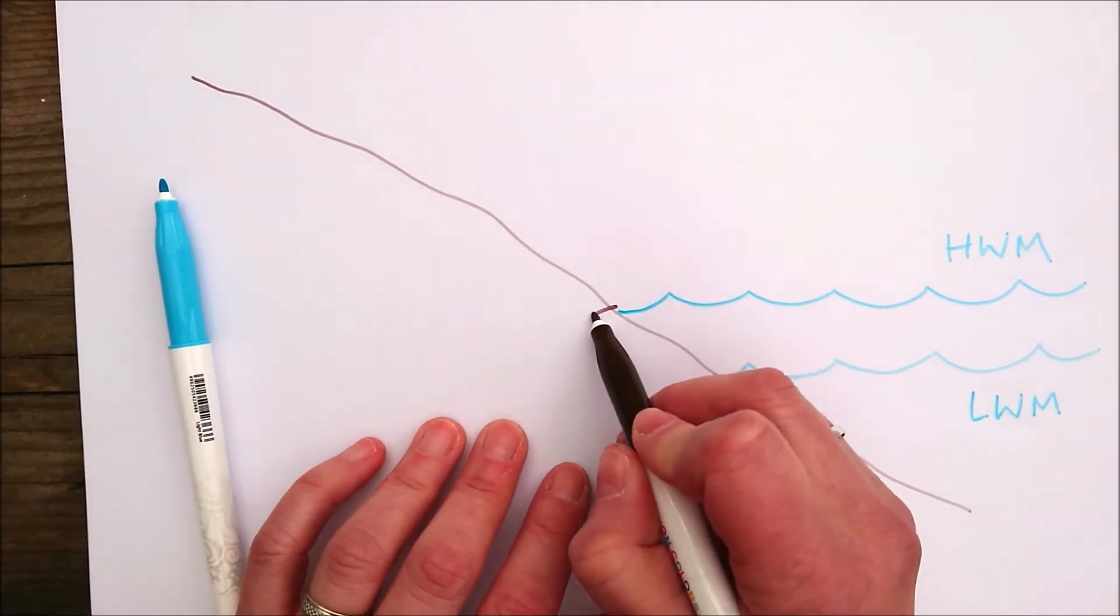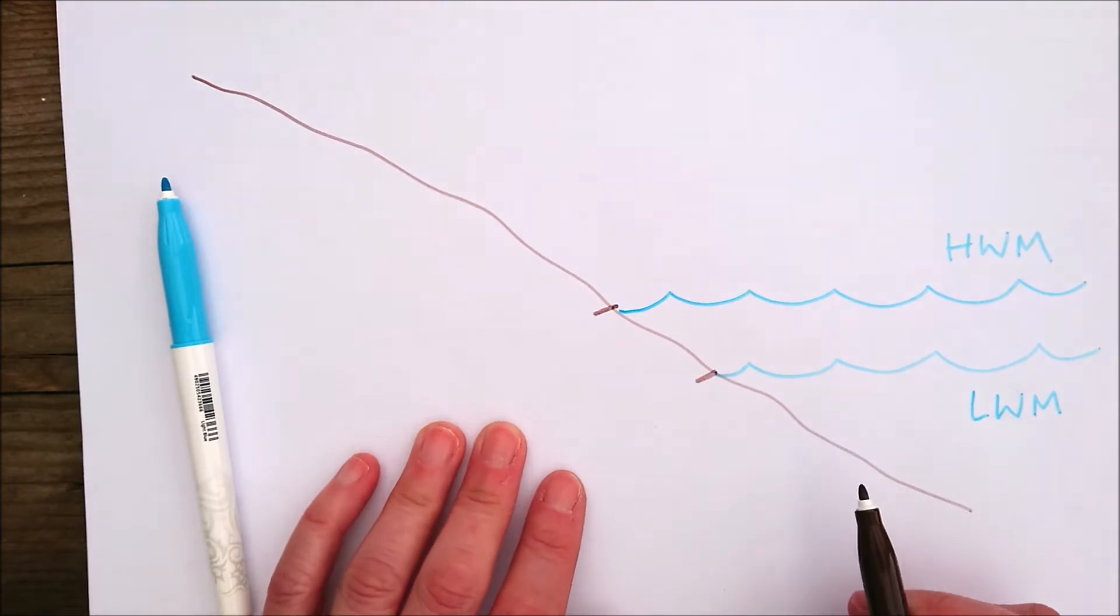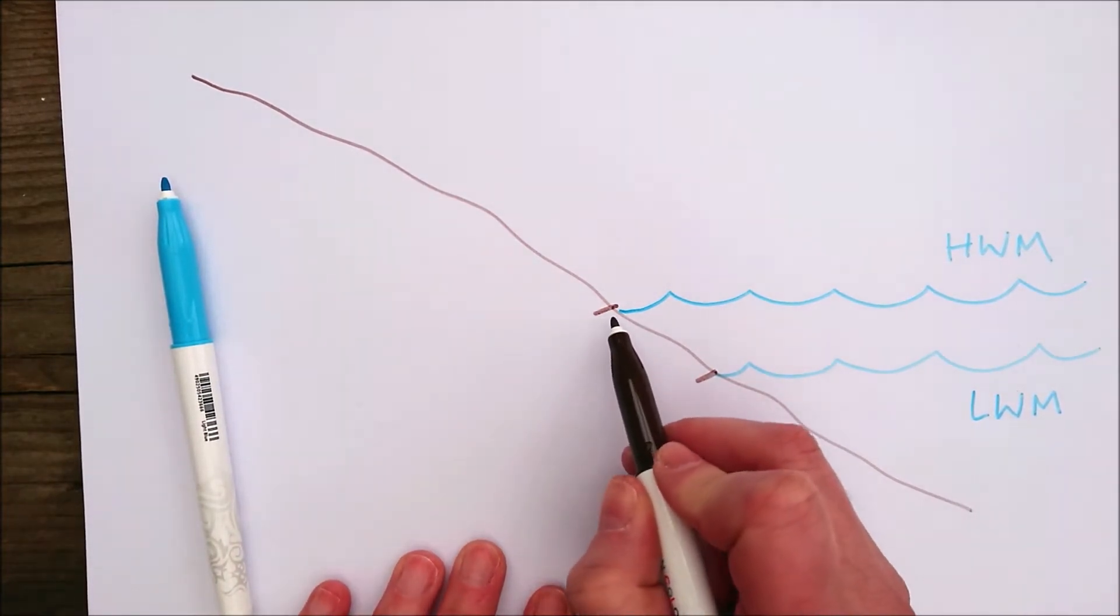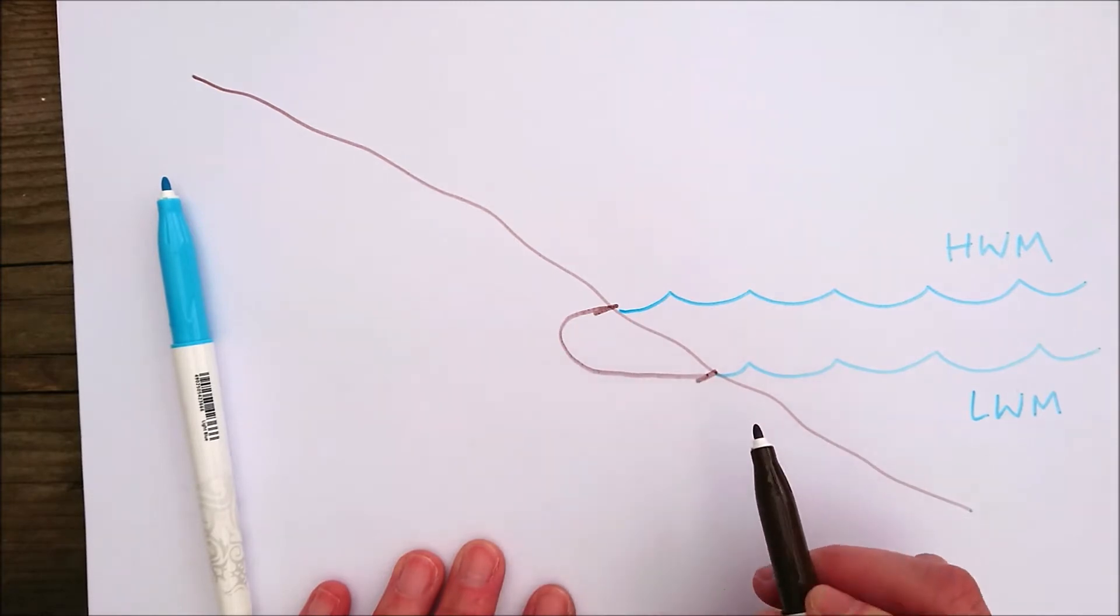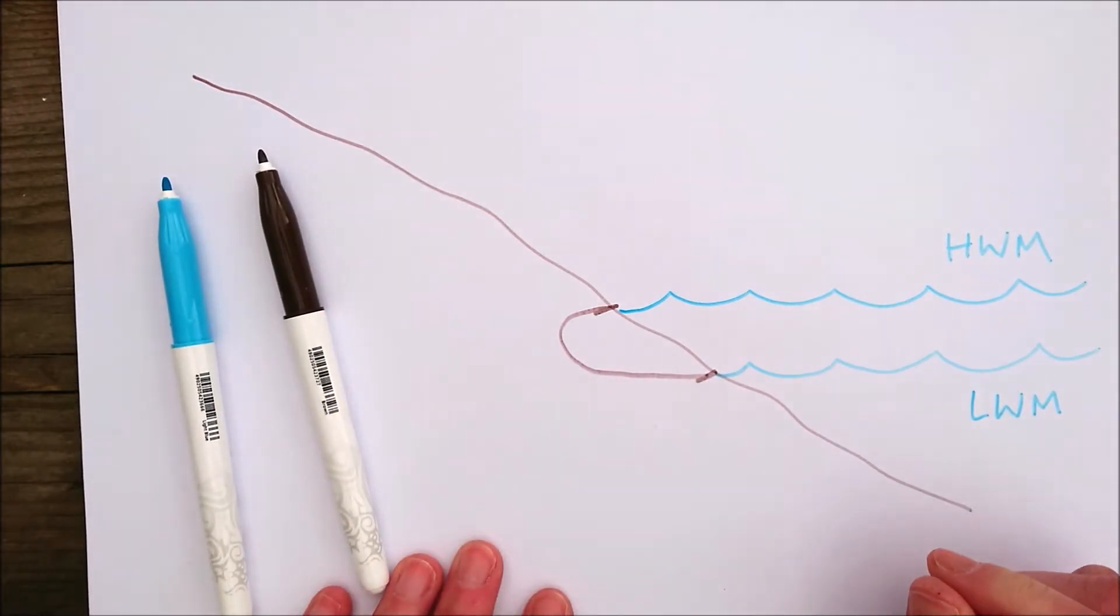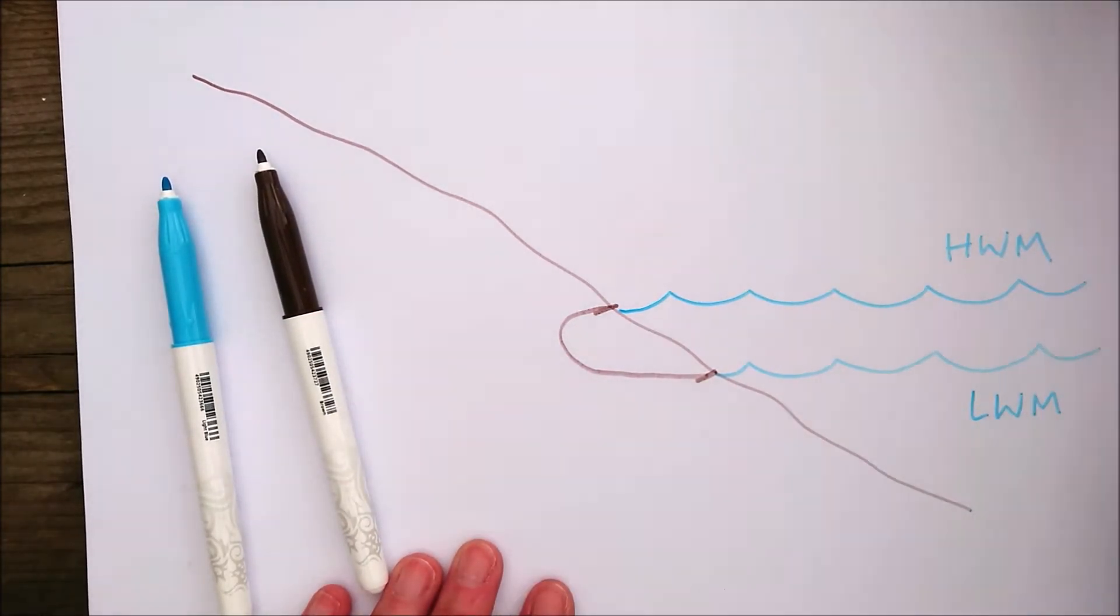So we're going to be looking at between here and here. Now as that section there erodes, it's going to wear away the land so that what you've got is something that looks a little bit more like this.